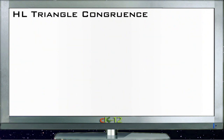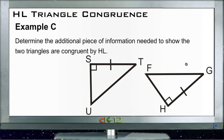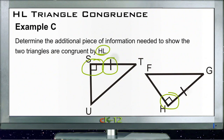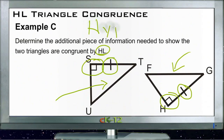For example C, determine the additional piece of information needed in order to show that the two triangles are congruent by HL. We need to know that they are right triangles and that the hypotenuse and one of the legs are identical. Here we know that the two triangles are both right triangles and we know that one of the legs are congruent, but again we don't know anything about the hypotenuse. So we need to know if the hypotenuse is the same.